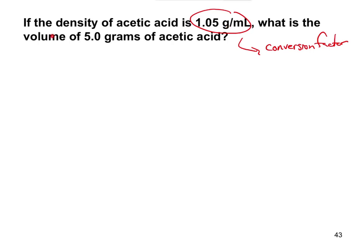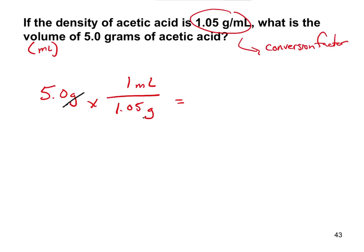In almost every problem, you don't start with the conversion factor — you use it to convert from one unit to another. The question asks for volume, so we start with 5.0 grams. Knowing grams, we can figure out milliliters using the conversion factor. We set up 5.0 grams times 1 milliliter per 1.05 grams — the grams cancel out, giving 5 divided by 1.05.